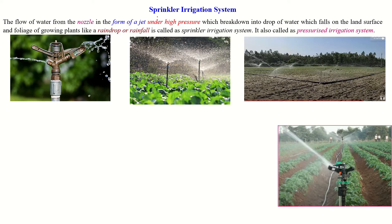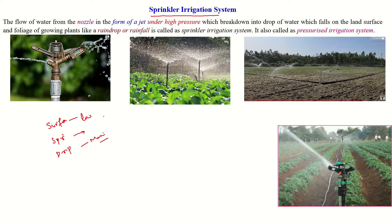Hello friends, in this session we are going to discuss about the sprinkler irrigation system. There are so many methods of irrigation system. One is surface irrigation system, second one is sprinkler irrigation system, and drip irrigation. The surface irrigation system has low application efficiency, whereas sprinkler irrigation is a little higher, and drip irrigation has the maximum application efficiency. Where high application efficiency is required and water scarcity is a problem, we use micro irrigation systems such as sprinkler and drip irrigation. In this session we will discuss about the sprinkler irrigation system.